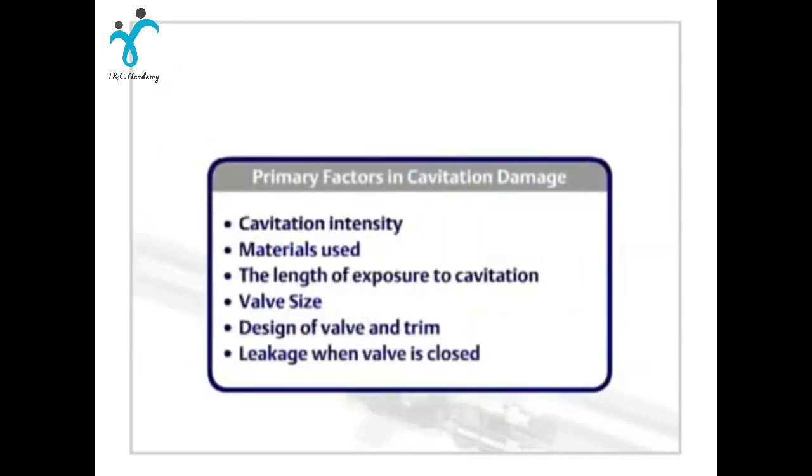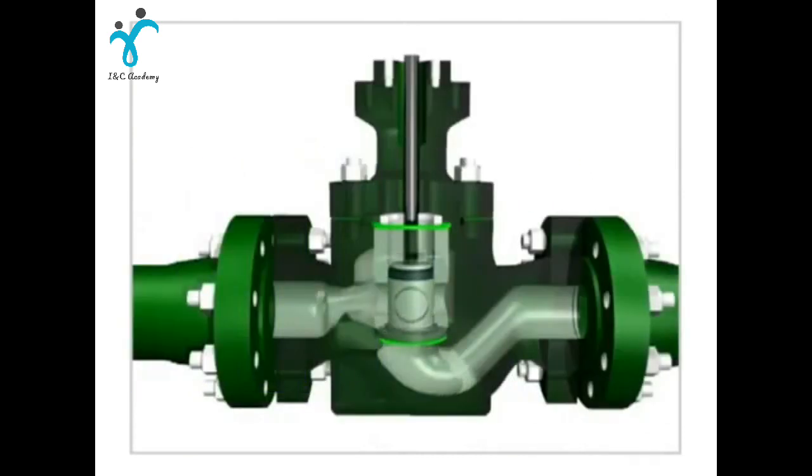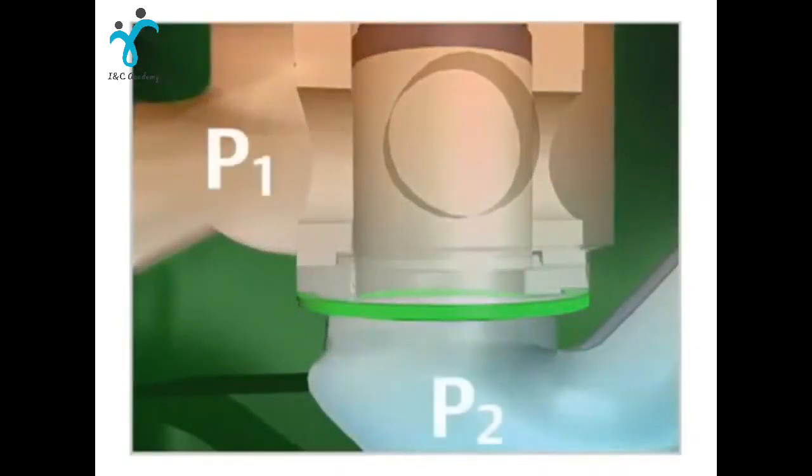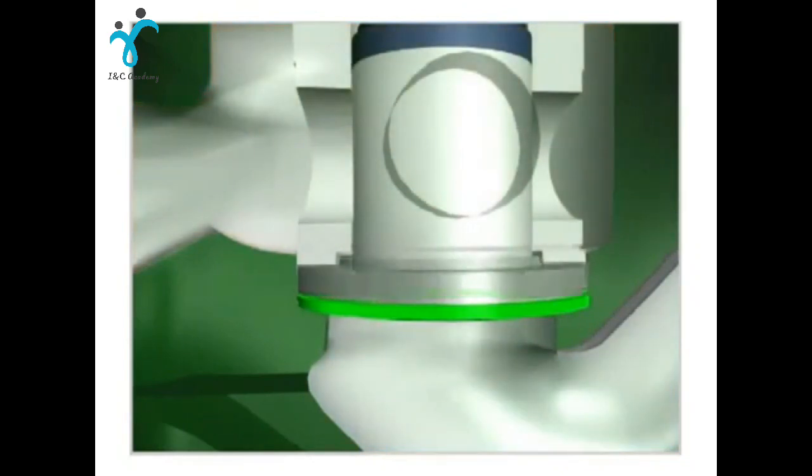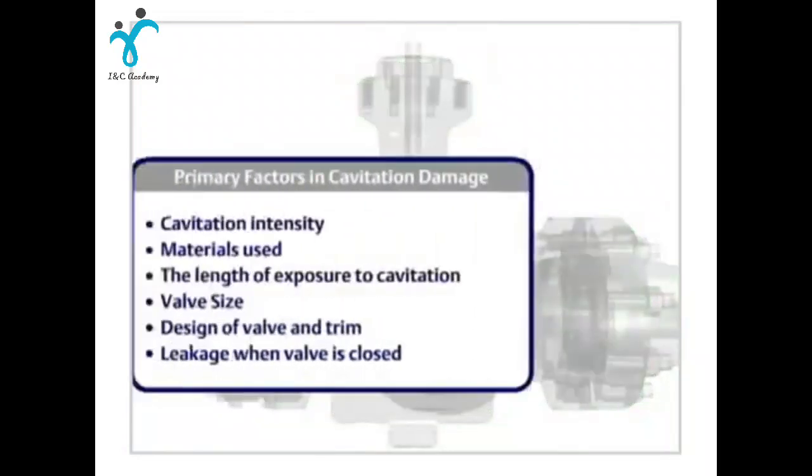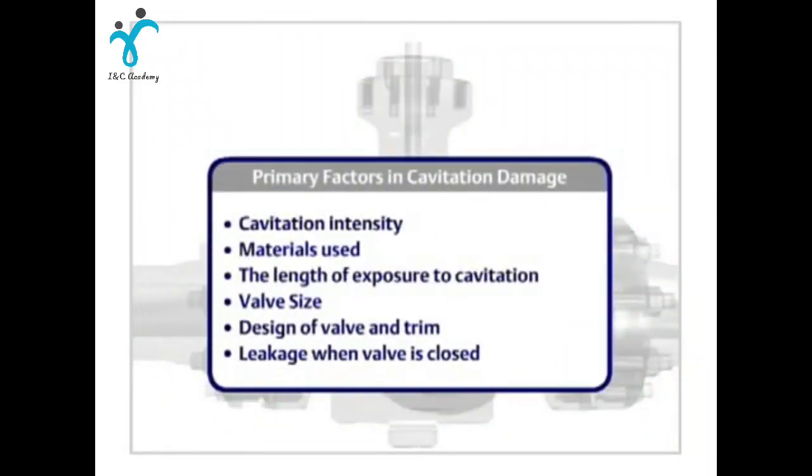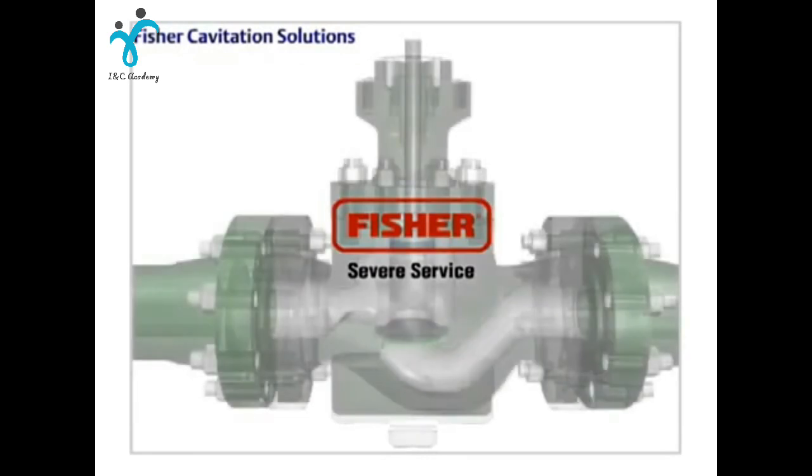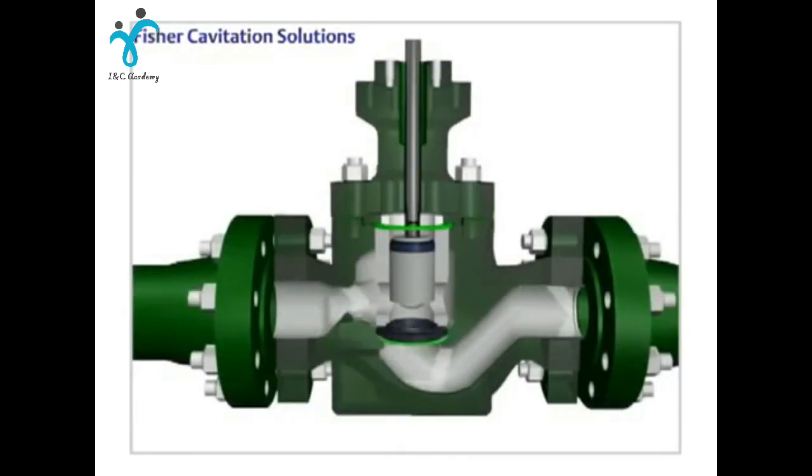If there is leakage occurring when a valve is closed. Fluid leakage moves fluid from a high pressure area to a low pressure area, which results in cavitation and potential damage. Cavitation damage can be reduced by altering or accommodating any of these factors. Cavitation damage can often be reduced or prevented by using the proper components. Emerson offers these solutions.